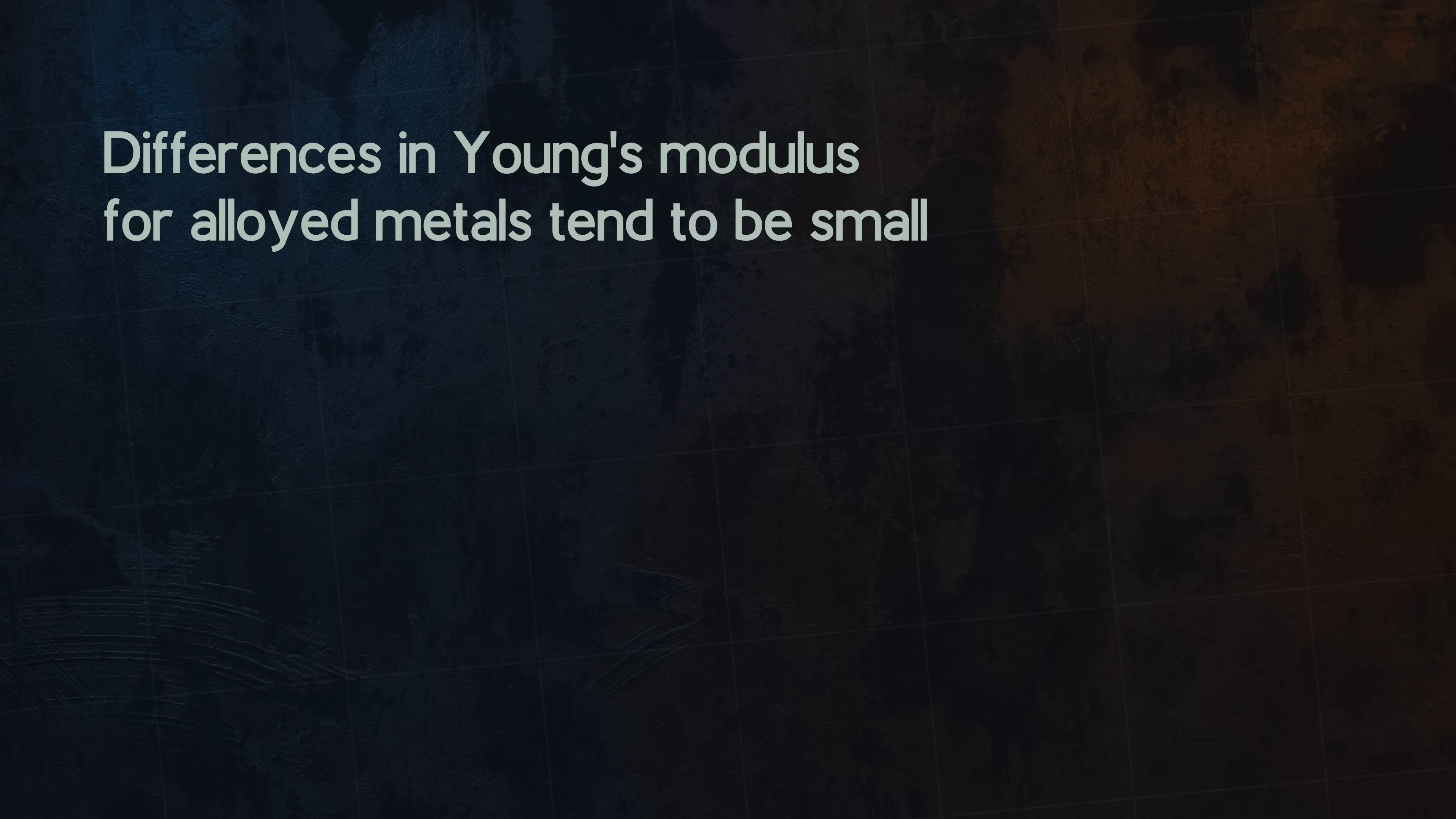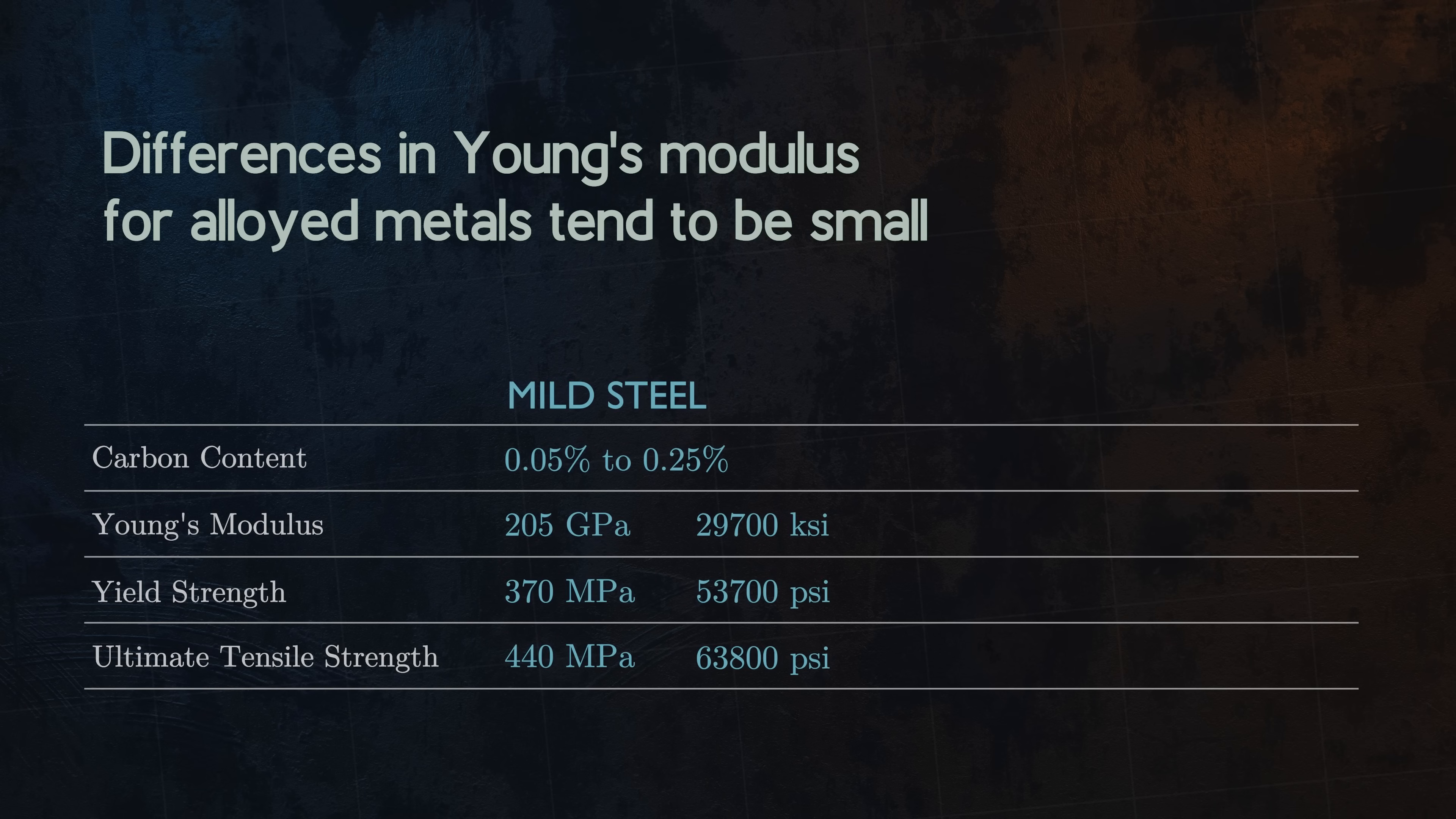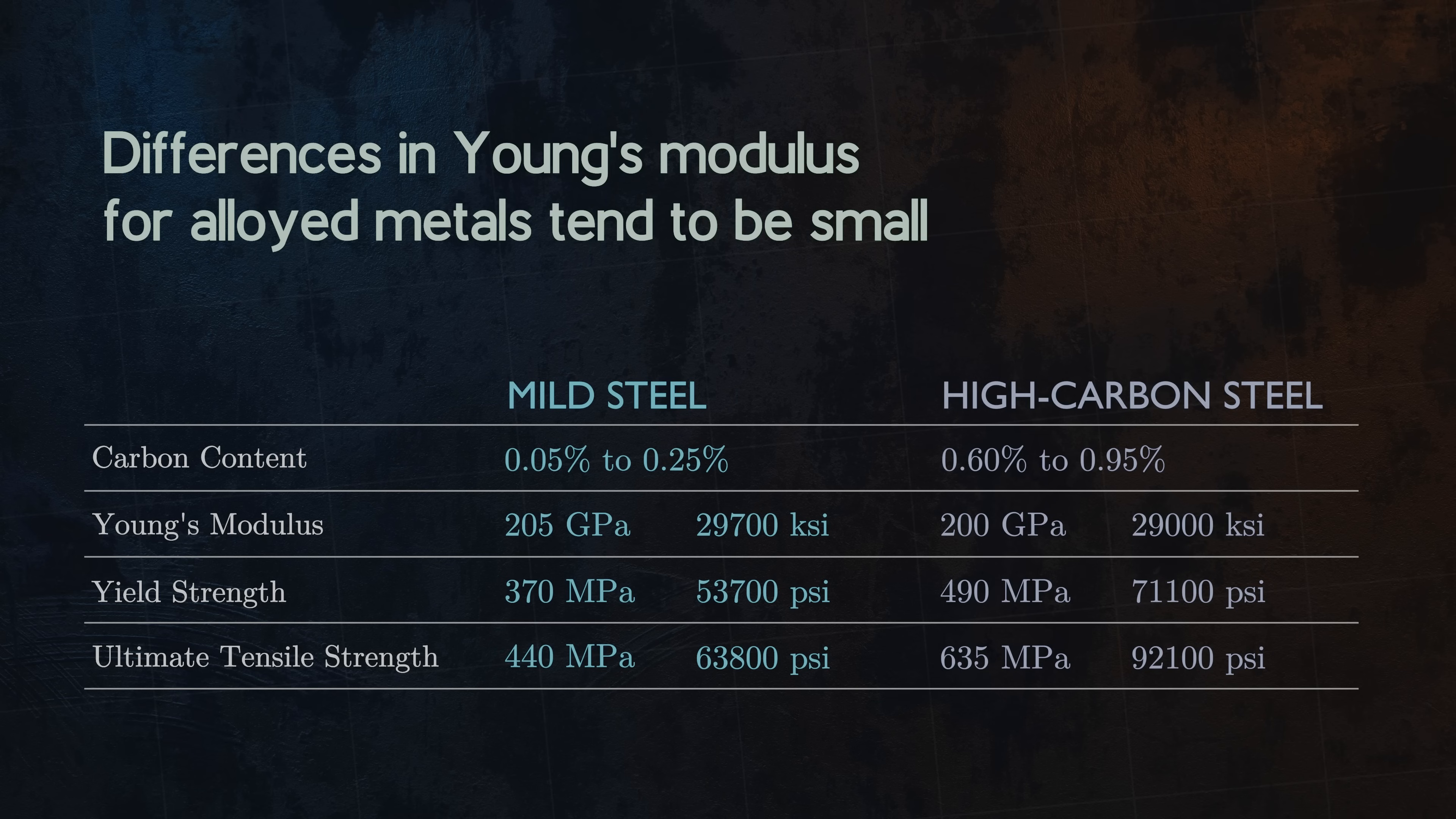Looking at things on the atomic level can also help explain why differences in Young's modulus for alloyed metals tend to be small. Let's take the example of carbon steel. Mild steel and high carbon steel have quite different mechanical properties. Their yield strengths, for example, are very different. And yet they have very similar Young's modulus values, which at first glance might seem surprising.